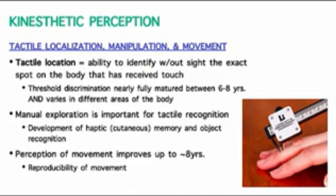However, on different parts of your body — say if you did two-point discrimination on your back or on a part of your thigh — it might not be as acute. Your sensation or perception of that touch might not be as sharp.